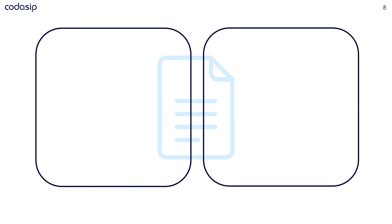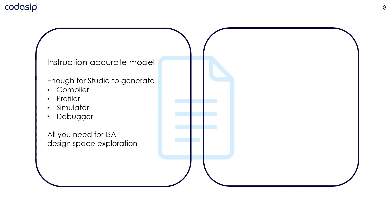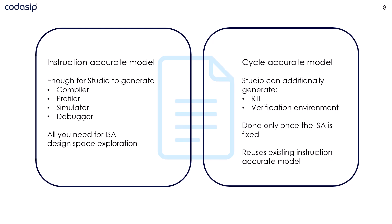When designing Codal, we understood that this needs to be simplified. Each processor Codal model consists of two parts. The first is called instruction accurate and contains a functional description of the processor design, which Codasip Studio needs to generate a compiler, debugger, profiler, and simulator — everything you really need to explore the various instruction sets you are considering. The instruction accurate part of the Codal model can be implemented very quickly. Only once you consider the instruction set stable is it time to implement the cycle accurate part, which adds everything needed so that Studio can also generate RTL and a verification environment. The already existing instruction accurate part is used here as well. All of that makes Codal very efficient for fast prototyping.